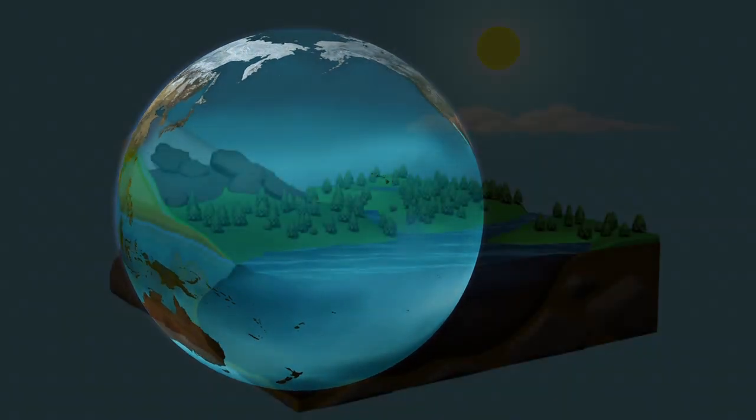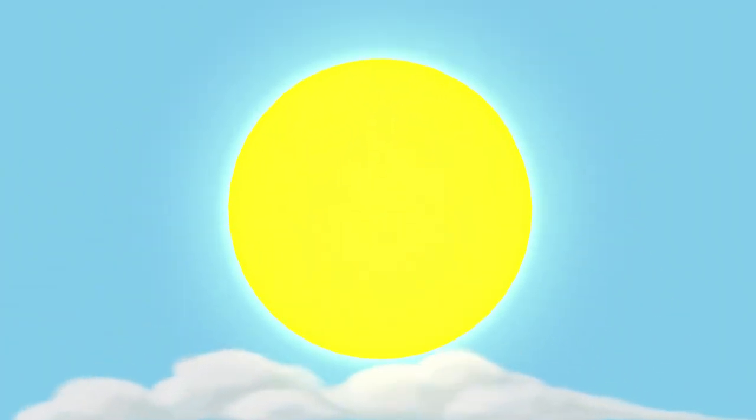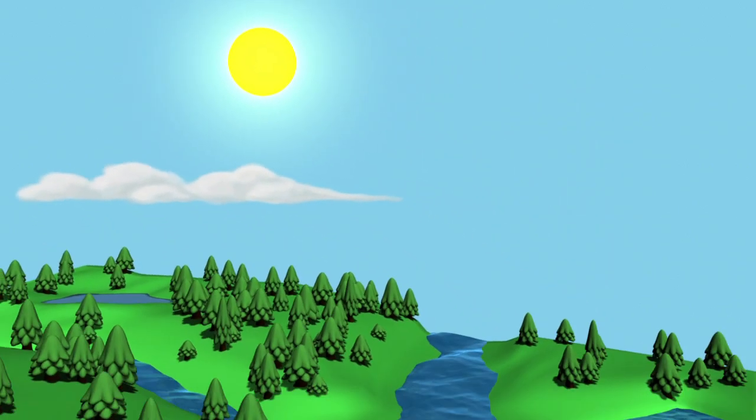How does water move, you might ask? Through the water cycle, the process by which water circulates from the ocean to the atmosphere to the land and then back to the ocean.